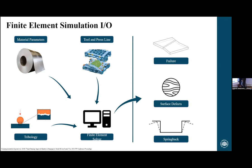Before moving on, I need to define what I mean by failure, because there are two definitions. There is the commonly known term 'fracture' — when you stretch something, at some point it breaks and you have two separate pieces. However, there is an alternative in sheet metal forming: the phenomenon of necking. Necking is not necessarily a fracture, but something that happens immediately before, where we see a localization of strains in a band or severe cross-section reduction, causing the component to lose its structural integrity.